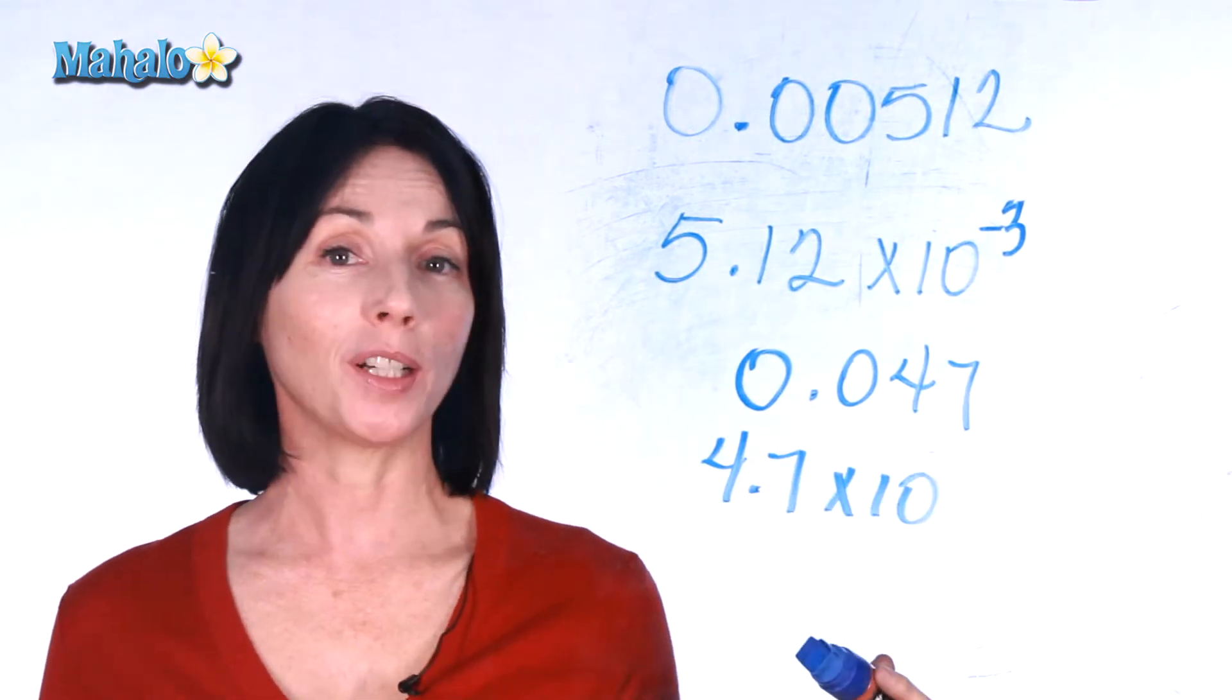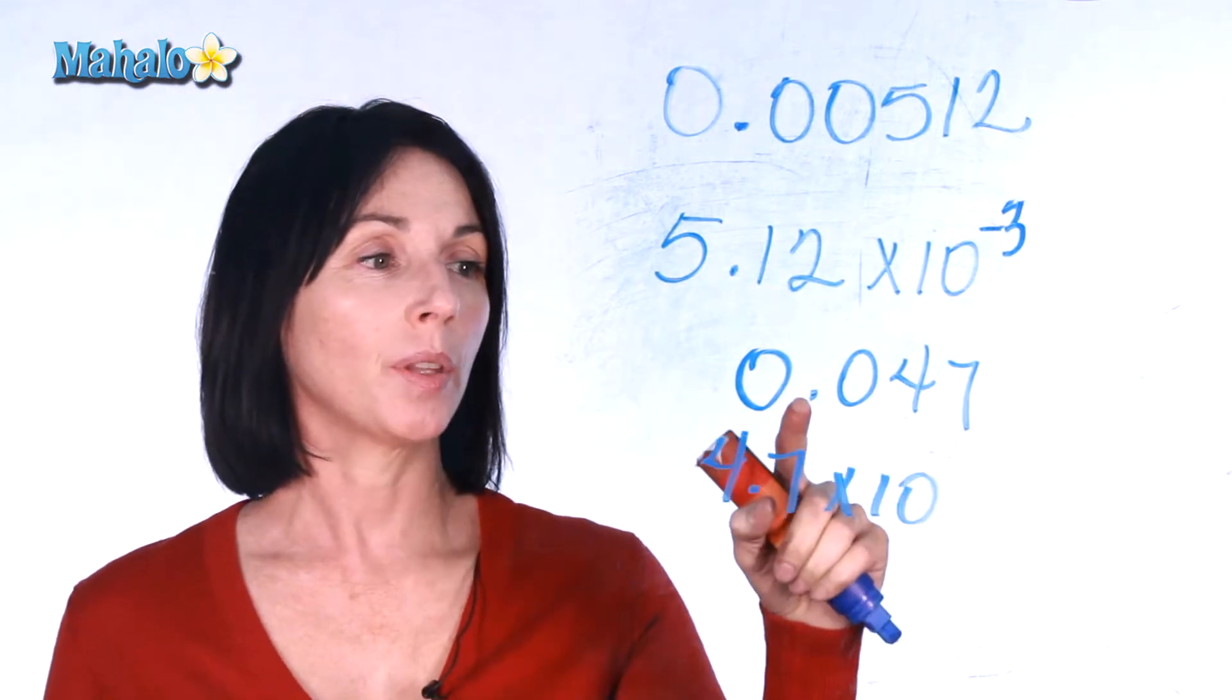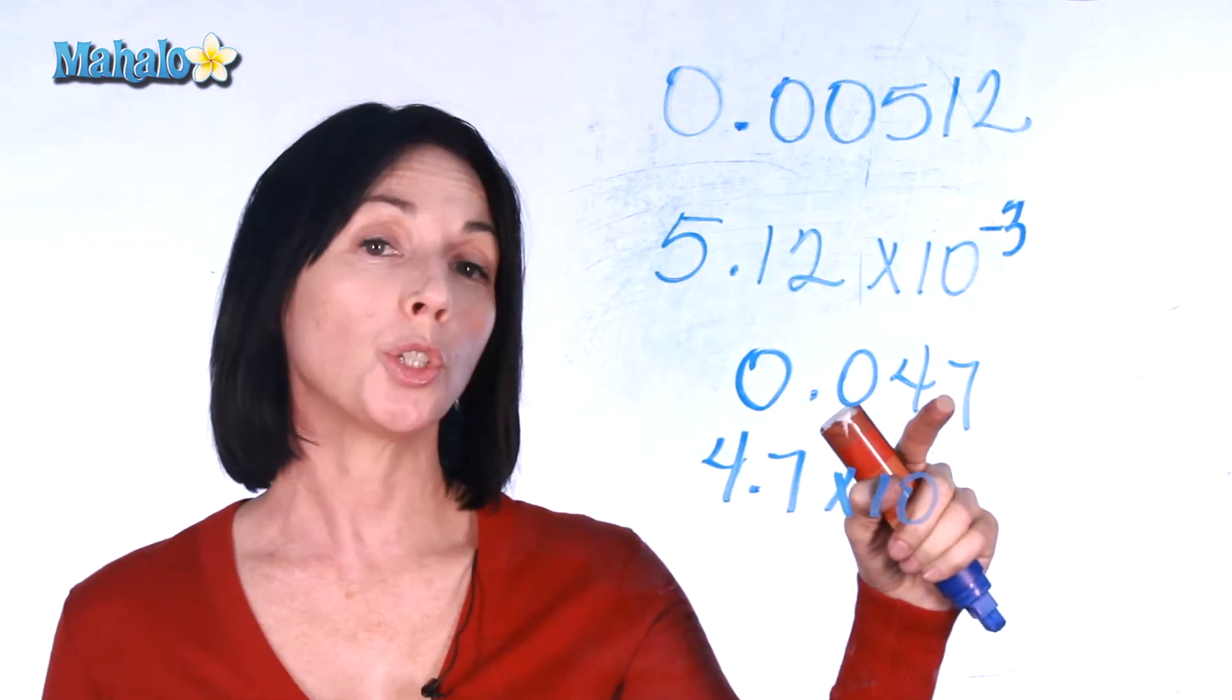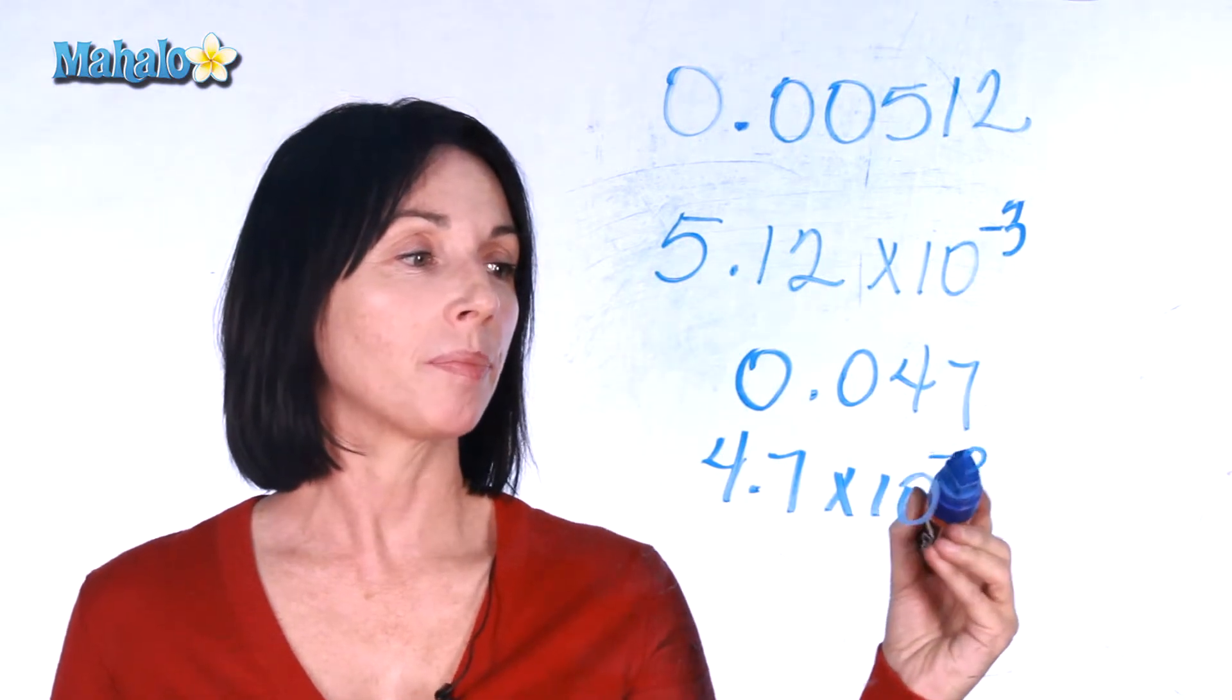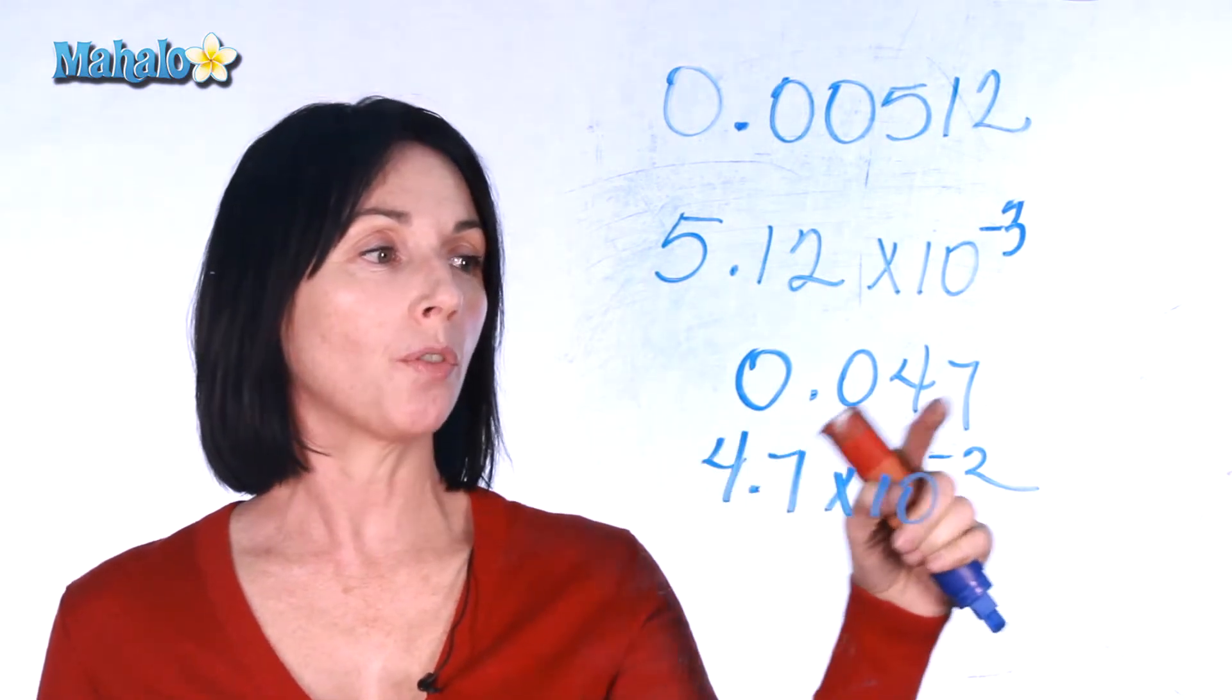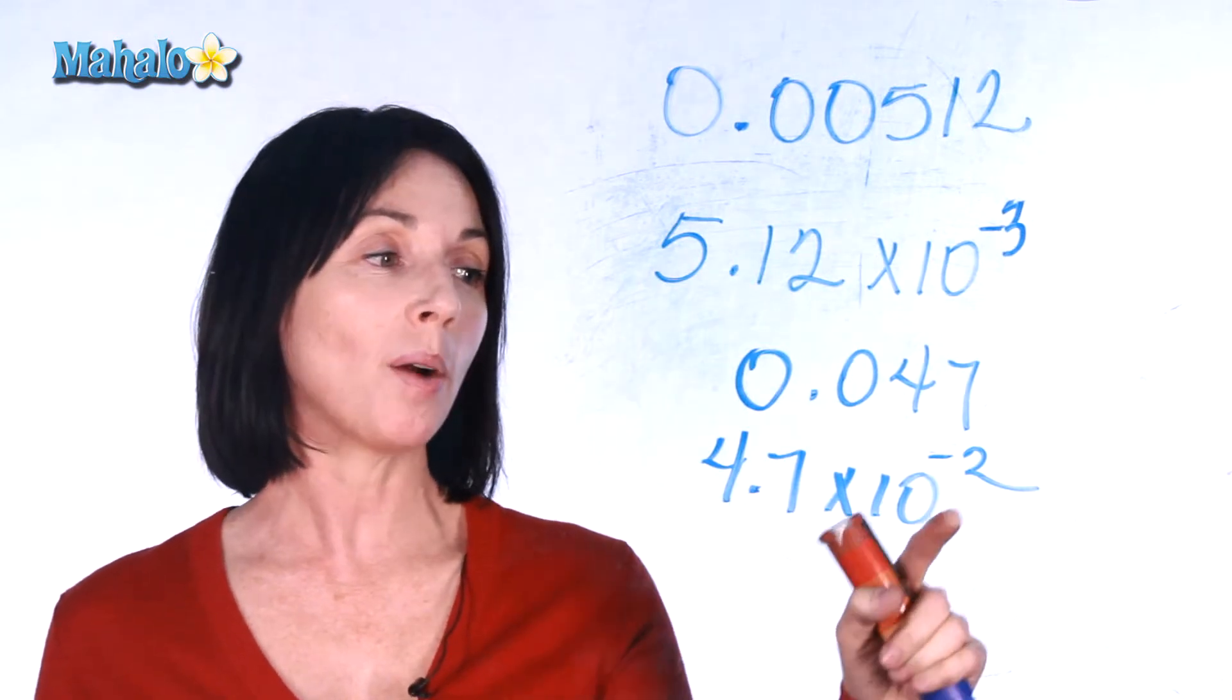Now how far did we have to move to get our decimal place from here to here? We moved it 1, 2 places. But because we went in this direction, it's a negative exponent. So 0.047 is equal to 4.7 times 10 to the power of negative 2.